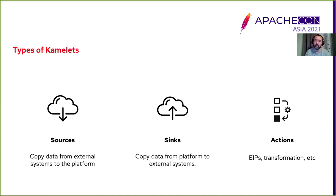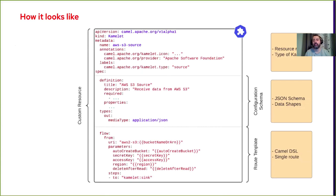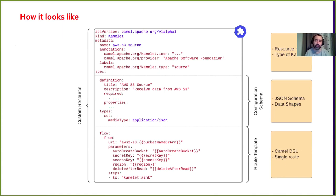Our Kamelets have three major parts. The first is the declaration — metadata related to the Kamelet icon, provider, kind, and type. The second is a configuration schema — you get the JSON schema of the Kamelet, with required and optional parameters, and data shapes so you know ahead of time what kind of data the Kamelet expects as input and what it gives as output. The final part of the Kamelet is the route template, which is, in the end, a Camel route with the Camel DSL.